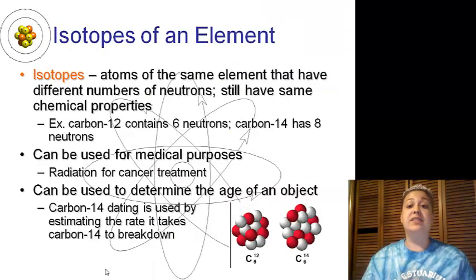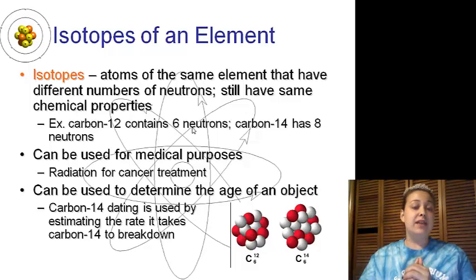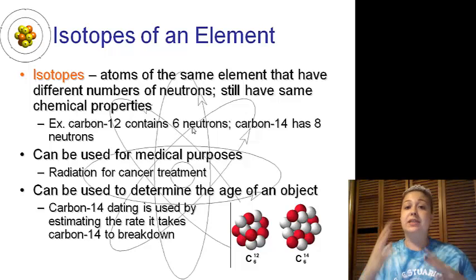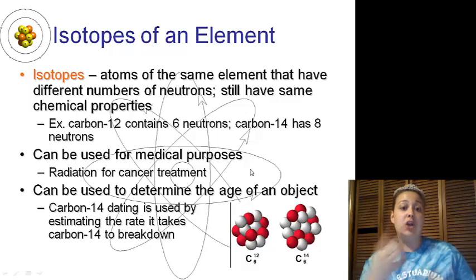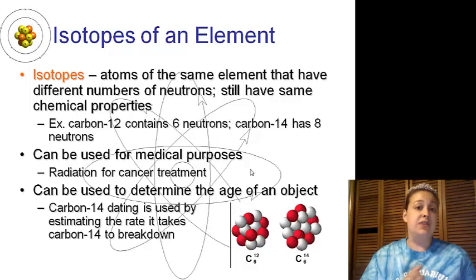Isotopes are elements of the same element but have a different number of neutrons. They still have the same chemical properties. Example is carbon-12 that has six neutrons, and carbon-14 which has eight neutrons. These two different isotopes break down at very different time periods, so we can use them for medical purposes, radiation for cancer treatment, and we can also use them in aging objects. Carbon-14 dating is used to estimate how old something is by the rate of carbon-14 breakdown.